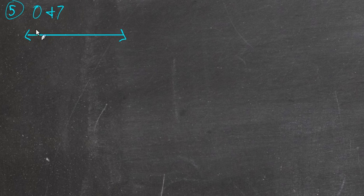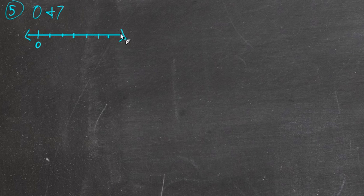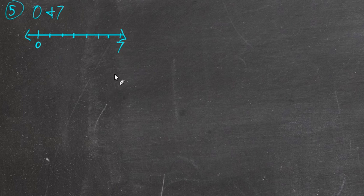You can put 0 here. Let's try and mark off a scale that is consistent. So 2, 3, 4, 5, 6, and 7. There is 7. There we go — we did it.